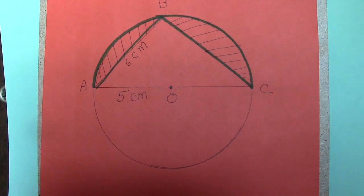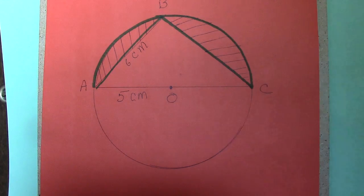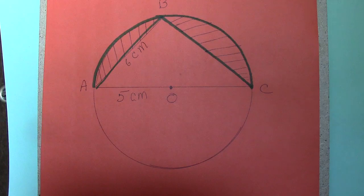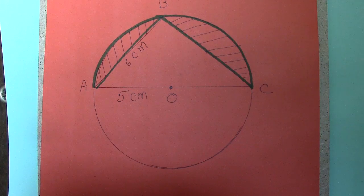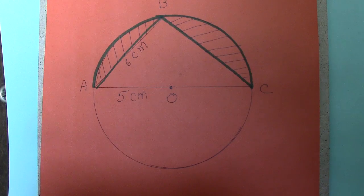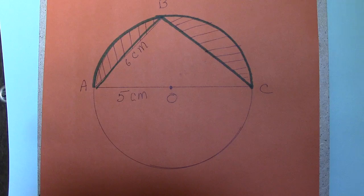We have an interesting problem here. AC is the diameter of the circle. A triangle is drawn on the diameter with the vertex B on the circumference.